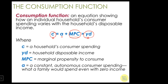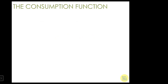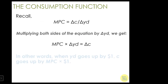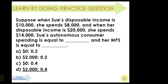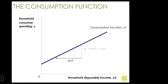Think about what you need to survive: food, water, clothing, shelter — that's autonomous spending. That's what we covered last class. The consumption function: on the horizontal axis we have disposable income, on the vertical axis we have consumption spending. The slope of this line is given by MPC, and the intercept is given by autonomous spending.